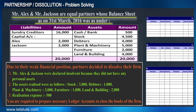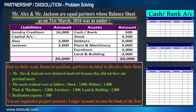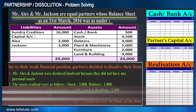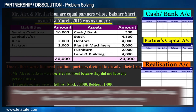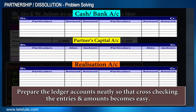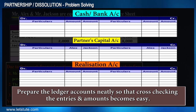After understanding the question, we know we'll require mainly three accounts: the cash account, capital account, and realization account. Let's prepare the ledger accounts neatly so that whenever we need to check any entry or amount, we can find it easily.